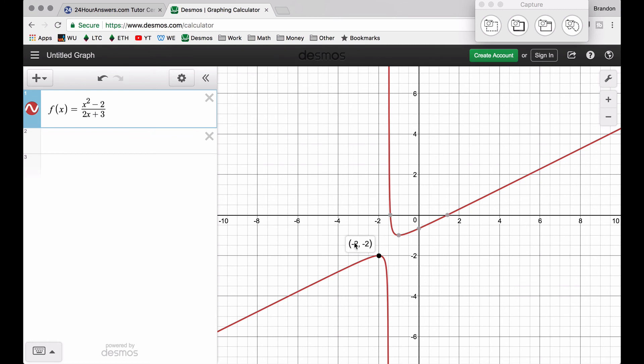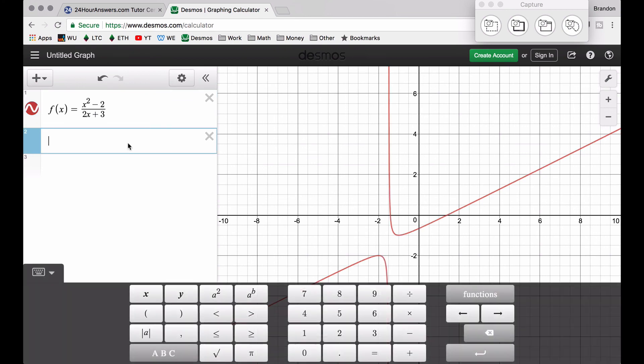Also when x is equal to negative two. Again ignore the y value here. But when x is negative two, we also have a critical value here because we have another horizontal tangent line. What about that other critical value, x equals negative three halves?